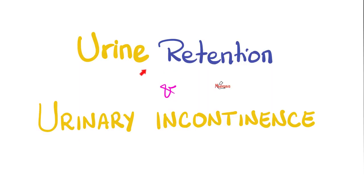Urine retention is very common after surgery, probably due to the anesthetic. Many general anesthetics are GABA agonists — they stimulate GABA. GABA is an inhibitory neurotransmitter, so GABA inhibits everything, including detrusor muscle activity.